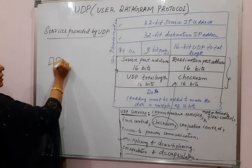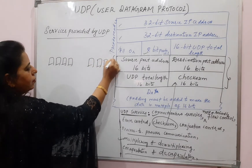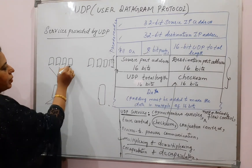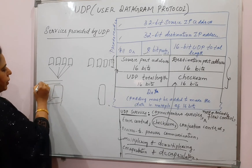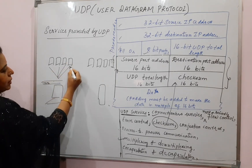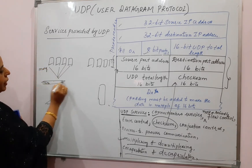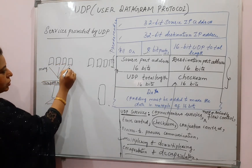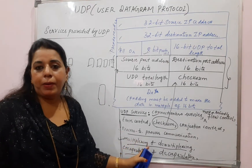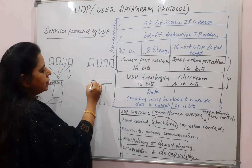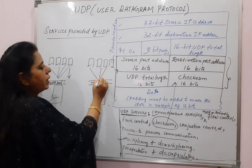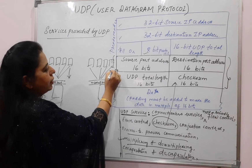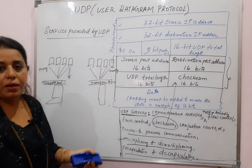Multiplexing and demultiplexing: in multiplexing, messages from different processes are taken by the transport layer. The messages are many but the entity is one — there is only one transport layer taking messages from different processes at the application layer. So it is many-to-one, which is called multiplexing. At the receiver side, the transport layer sends those messages to the different processes running at the application layer — that is one-to-many, which is called demultiplexing.